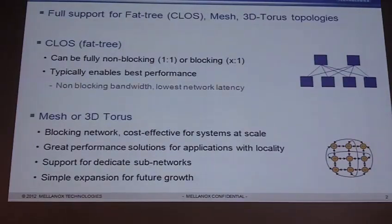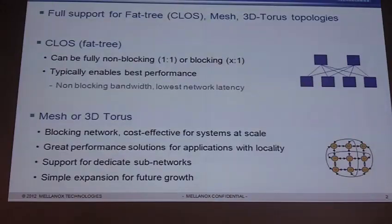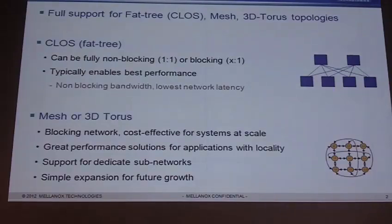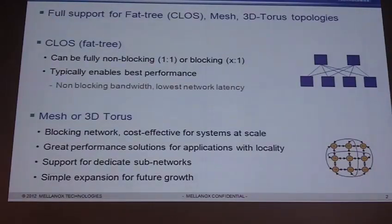If I look at the difference between these topologies, a fat tree can be fully non-blocking, one-to-one ratio, meaning that whatever type of traffic I'm going to deliver from my servers, I can always get full bandwidth between those servers. Typically a fat tree can have the best performance — non-blocking bandwidth and the lowest network latency. Meshes or 3D Tauruses are blocking networks, but they can be very cost-effective for systems at scale.